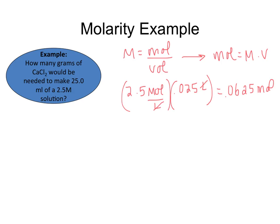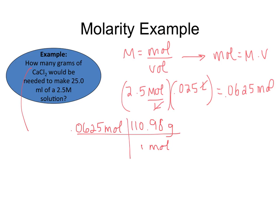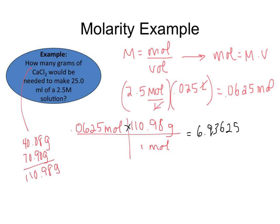The problem is asking us for grams of calcium chloride, so we are going to take that amount and using molar mass, convert it back into grams. One mole is equal to the molar mass, which in this case is 110.98 grams. One calcium is 40.08 grams, and we have two chlorines at 35.45 each to give us 70.90 grams, all adding up to 110.98. So when we multiply 110.98 times 0.0625, we get 6.93625. According to our least number of sig figs in the problem, which is 2, our answer comes out to 6.9 grams of calcium chloride.